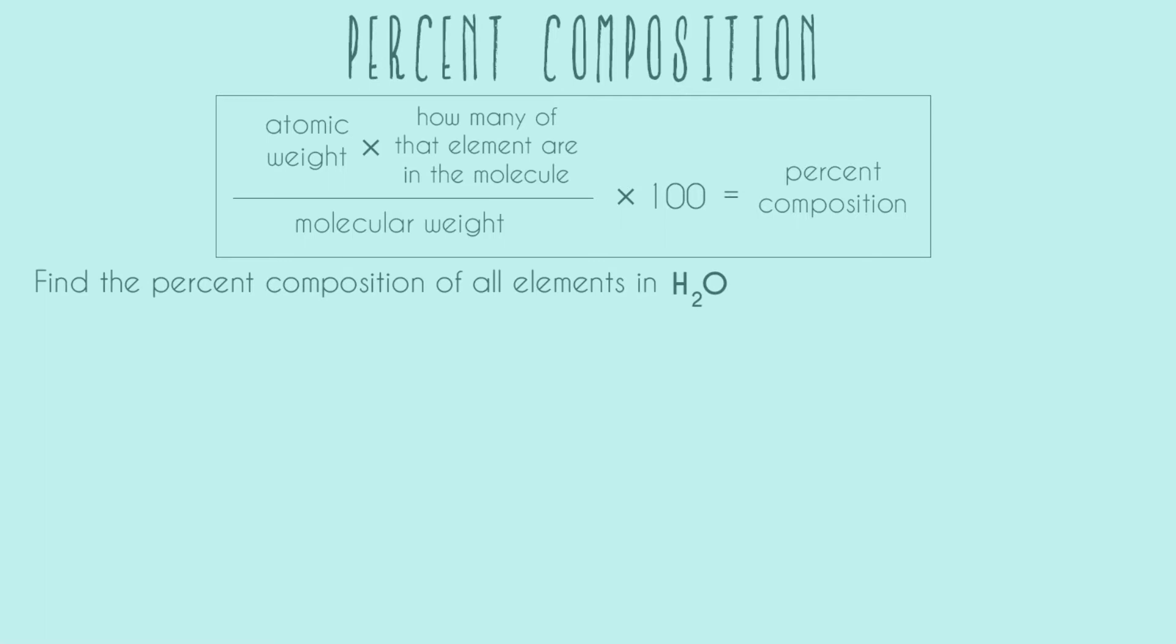So let's find the percent composition of all elements in H2O. We can see by looking at the denominator of our formula that we're going to need the molecular weight. So our first step is to find the molecular weight. To find the molecular weight, we're going to need the atomic weight and how many of each element we have in that molecule.